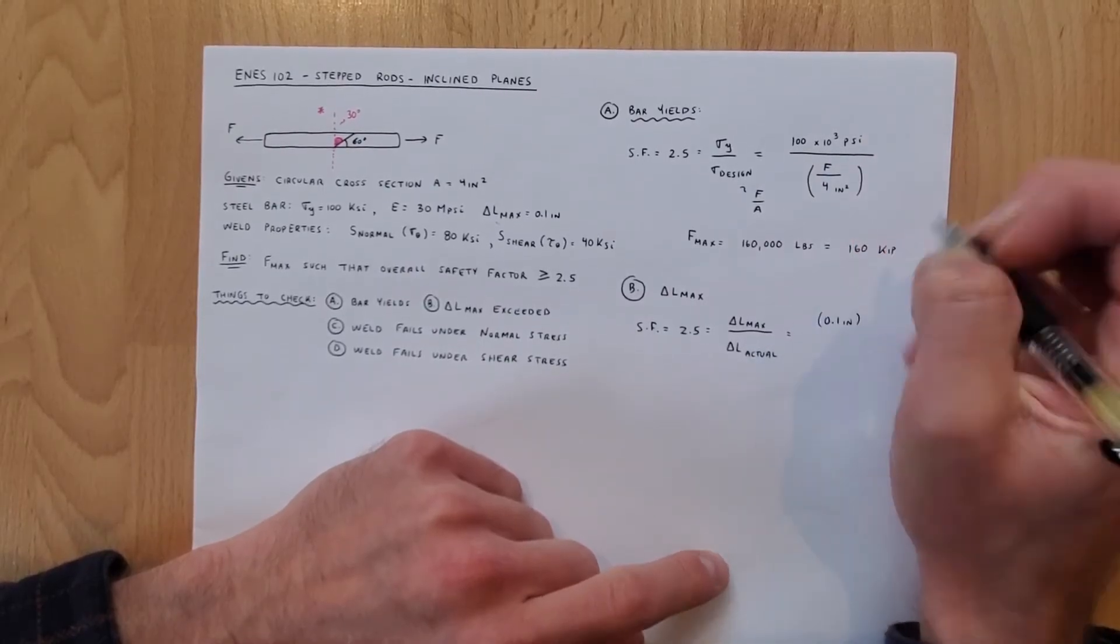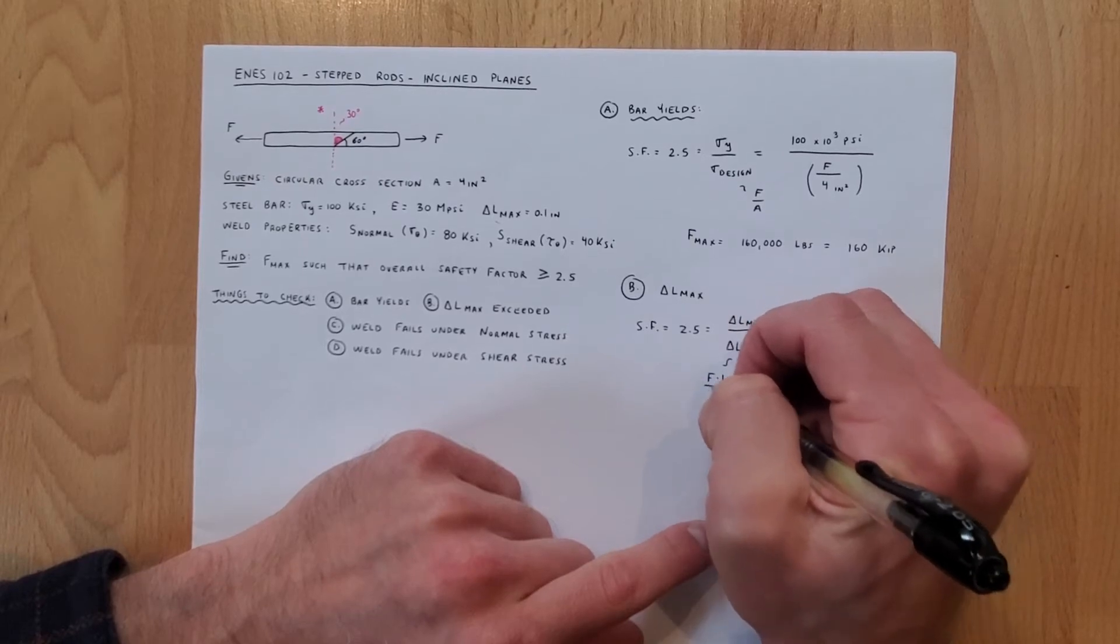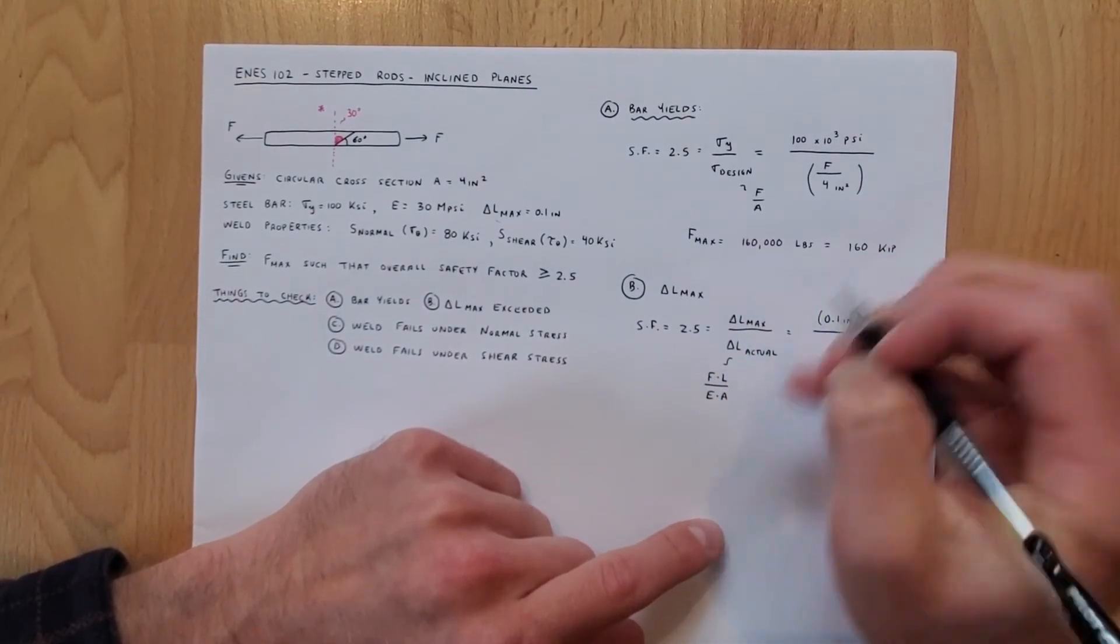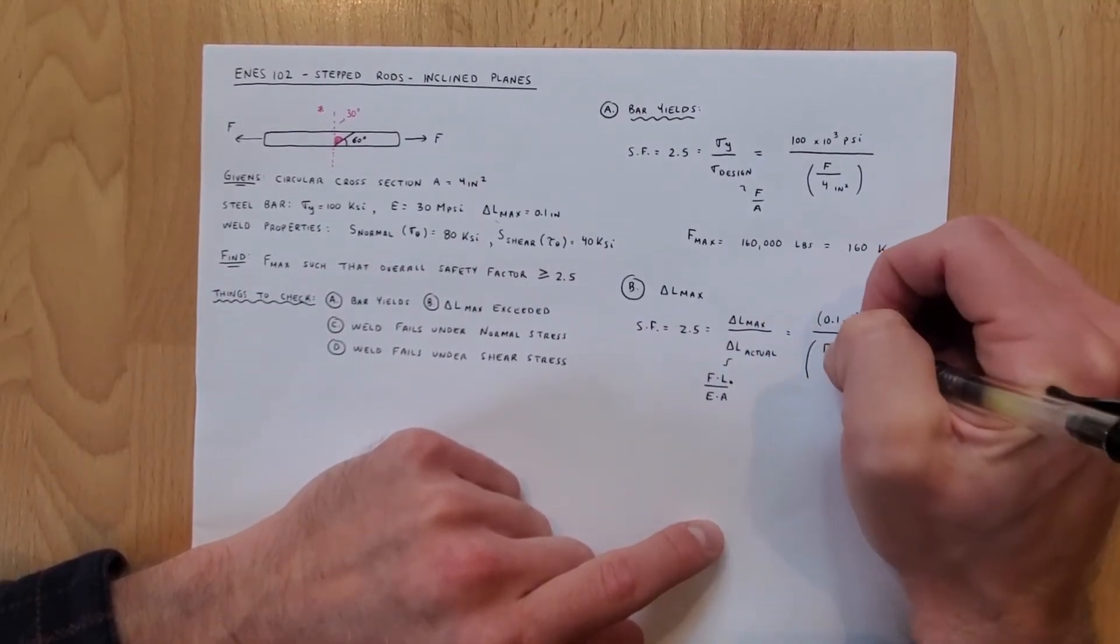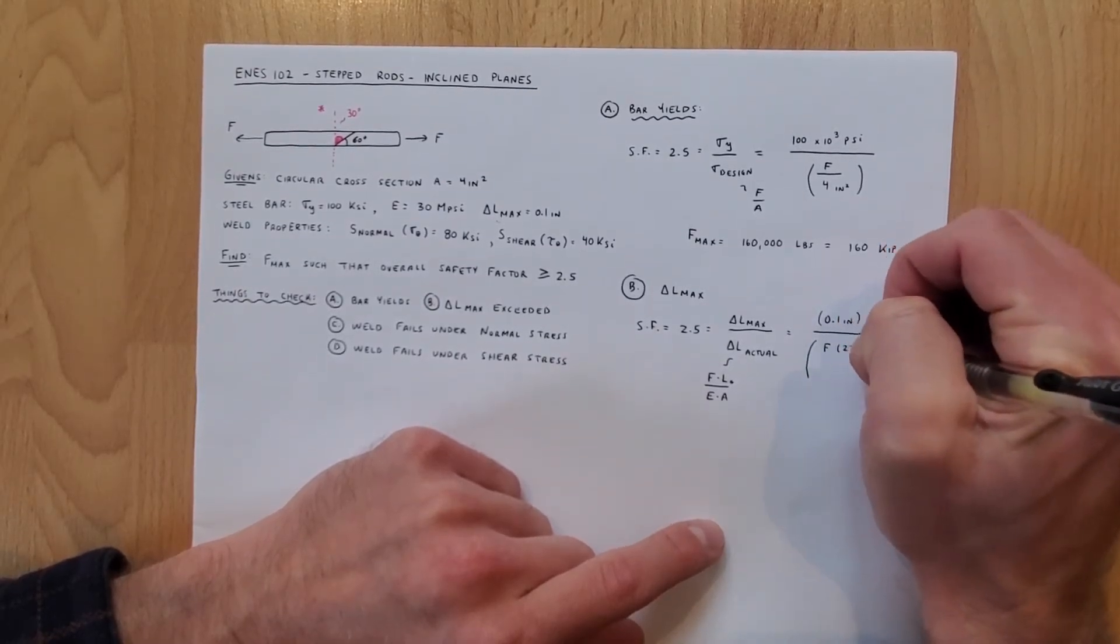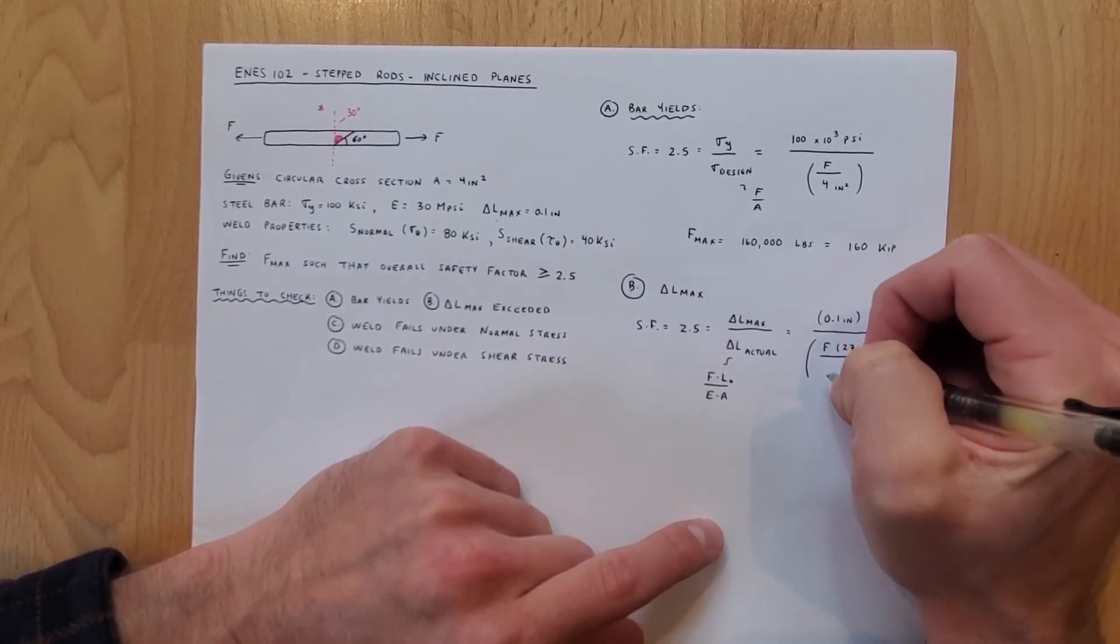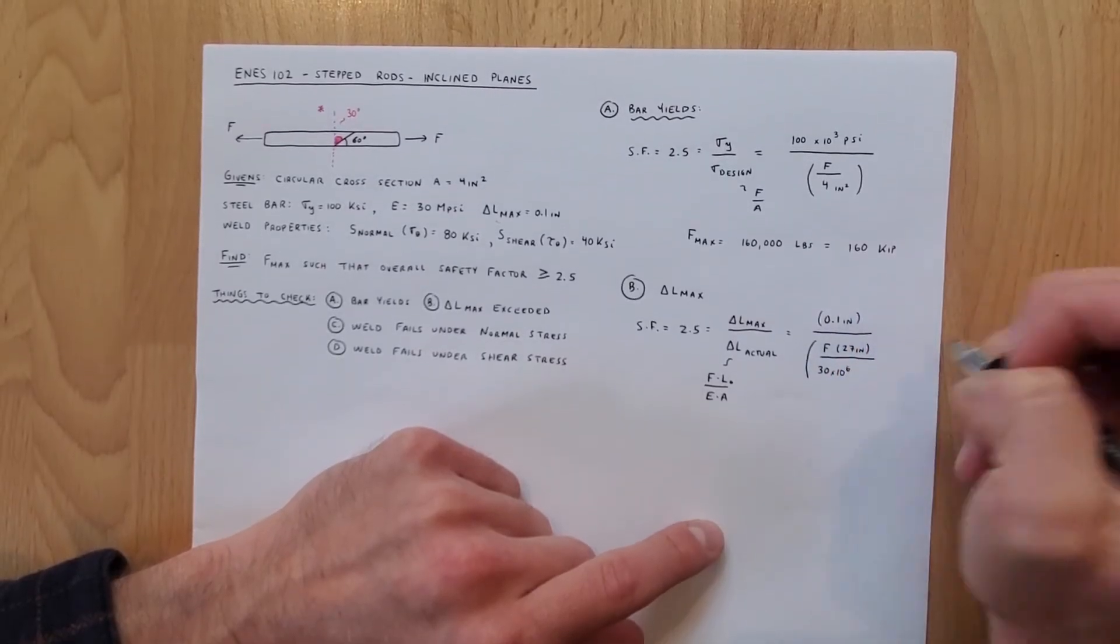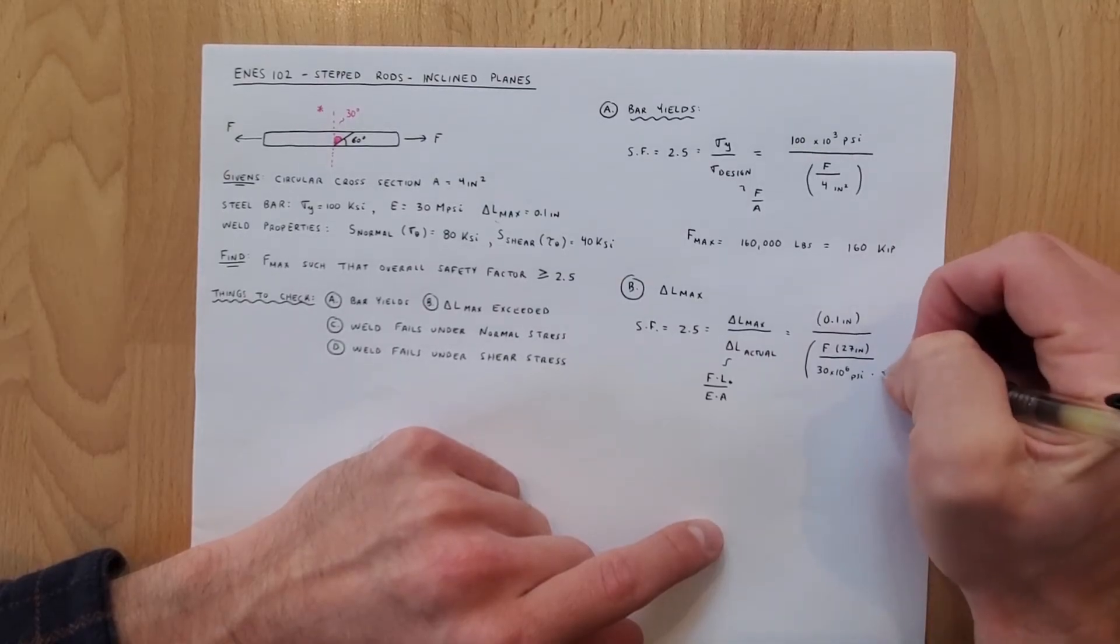Well to compute this we just plug in our limit for delta l max which is 0.1 inches. This is what goes on the top and remember that our equation for delta l is f times l over e times a, times the l initial which is 27 inches over Young's modulus which is e or 30 times 10 to the sixth psi times the area which was 4 inches squared.